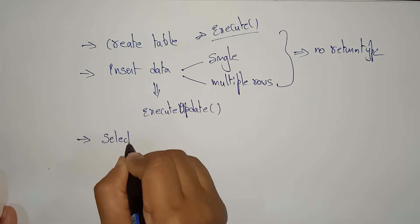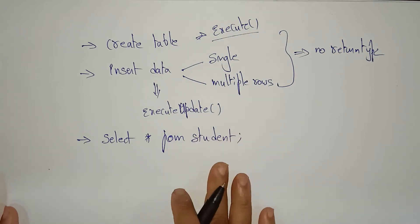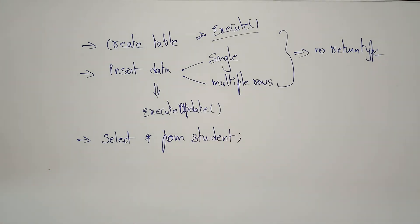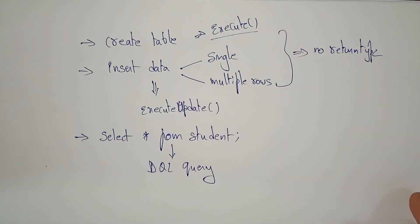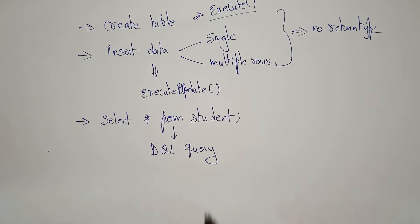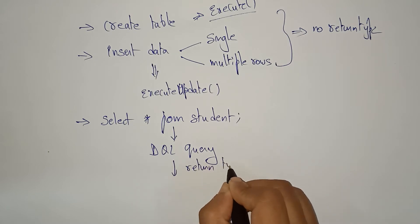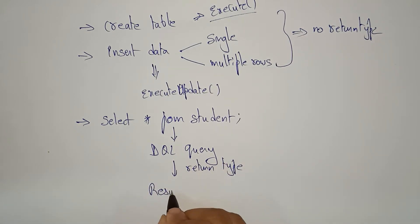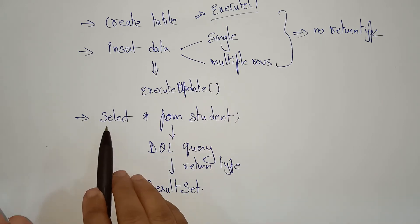Now two tasks are completed. Let's work on the third task: SELECT star FROM student. To execute this query we require a DQL query, and the return type of a DQL query is ResultSet.